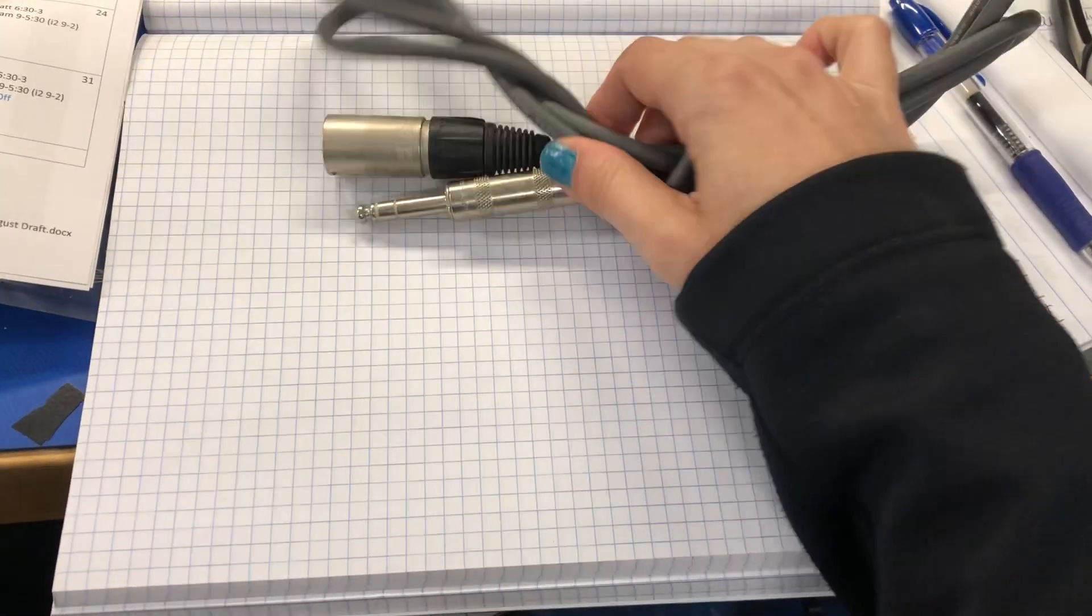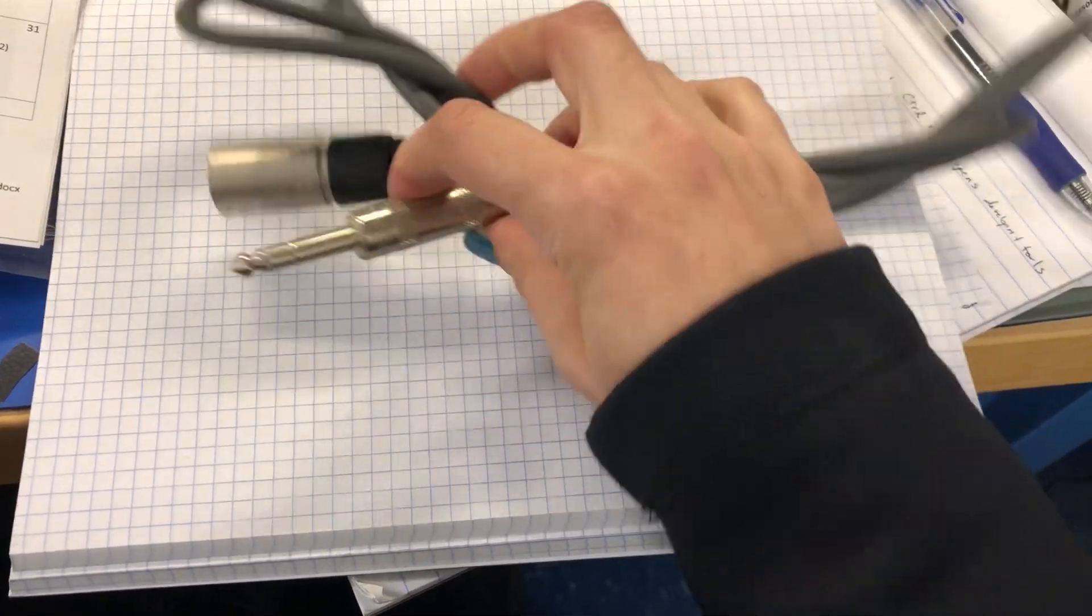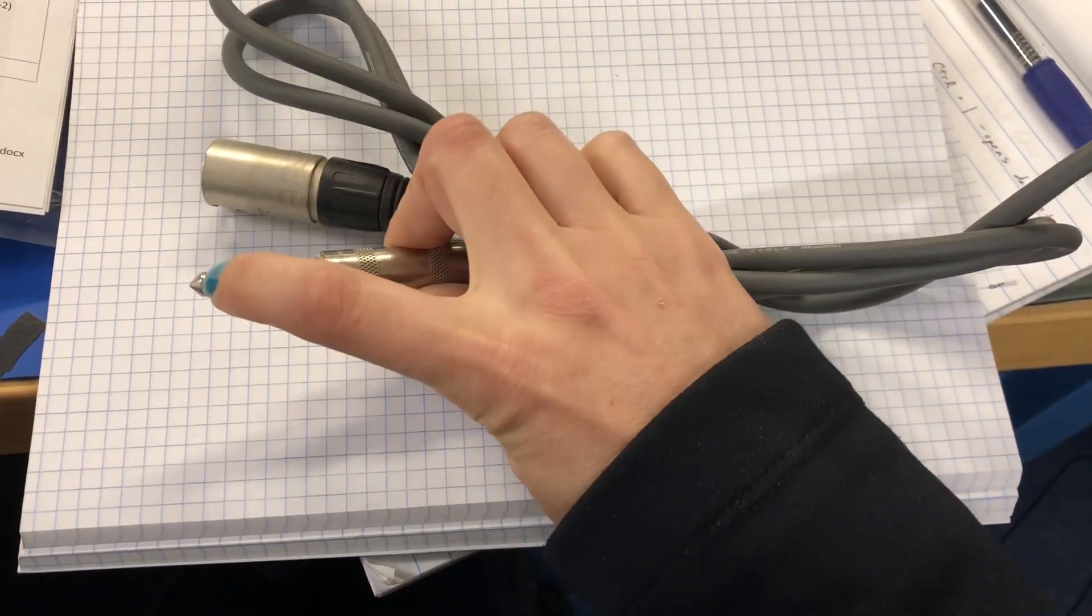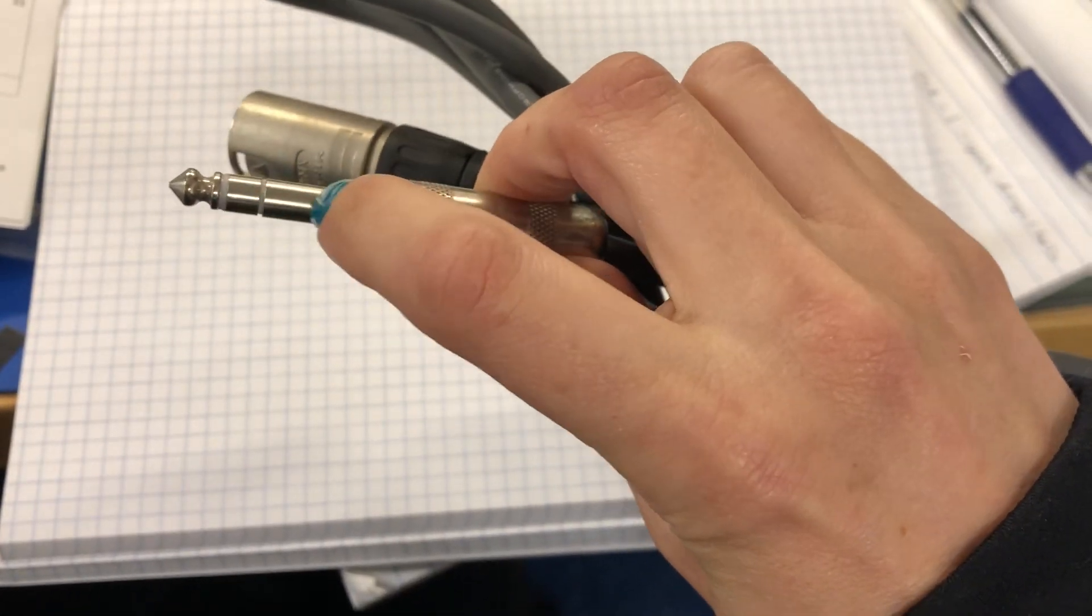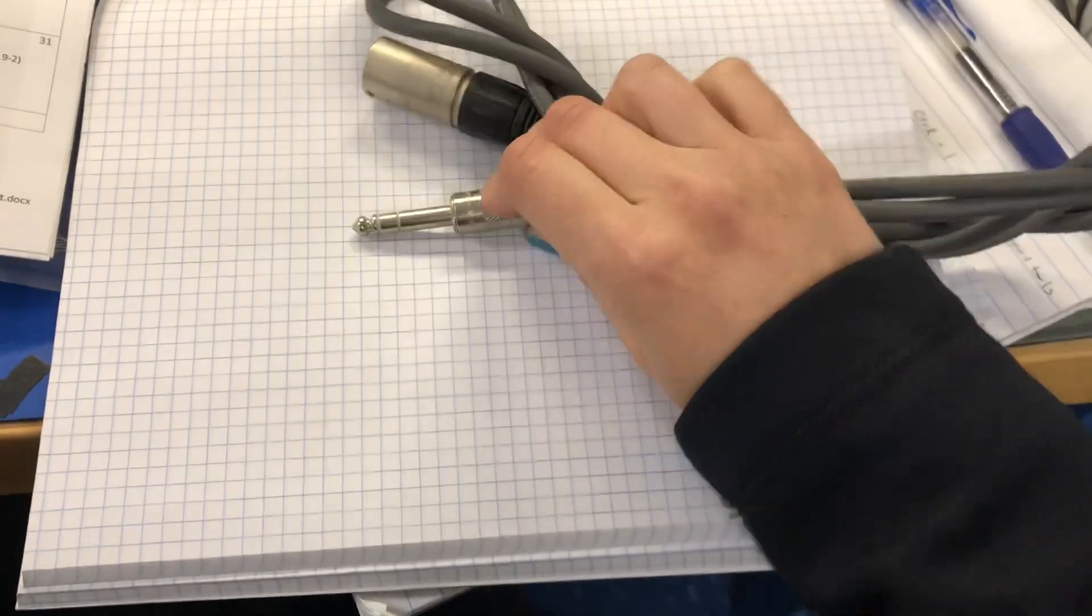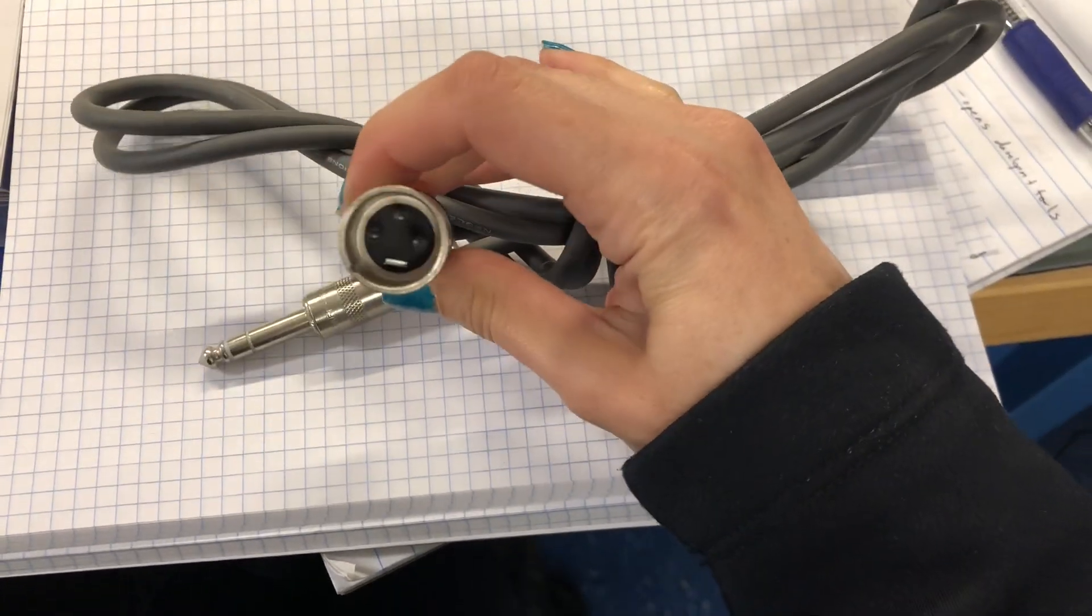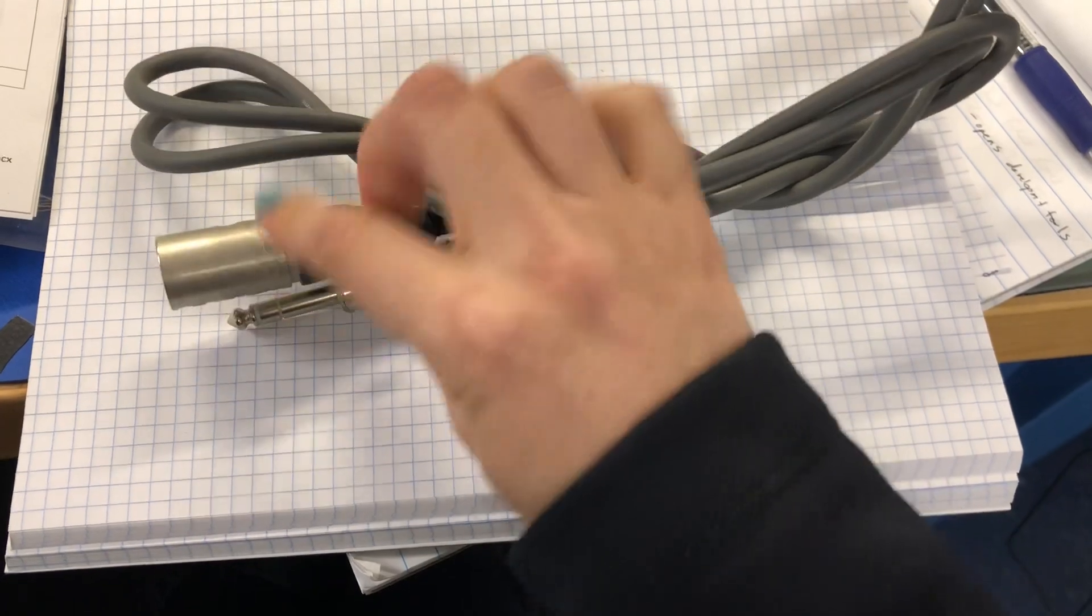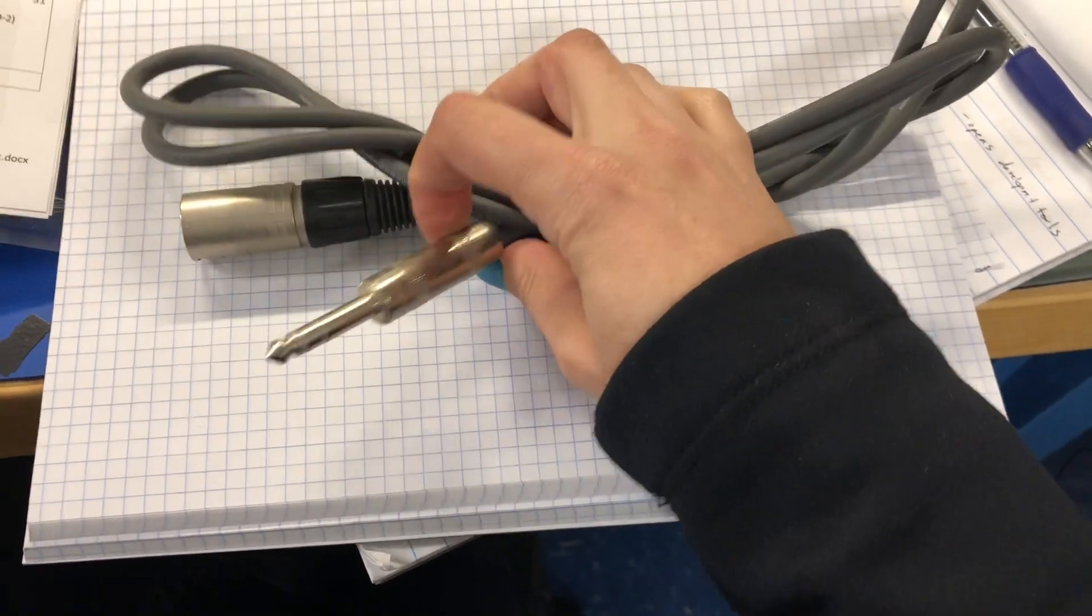So here we have a balanced mono cable. If you look at the end of this cable, you'll see there's a tip, a ring, and a sleeve. So there's three sections to this cable. An XLR also has three pins which all correspond to one of these sections of this end of the cable.